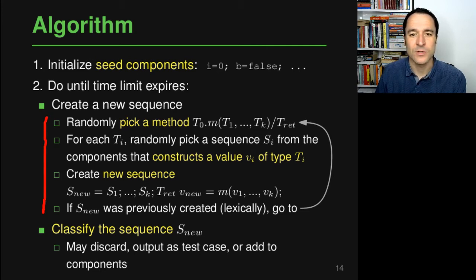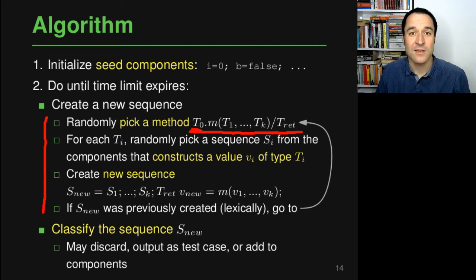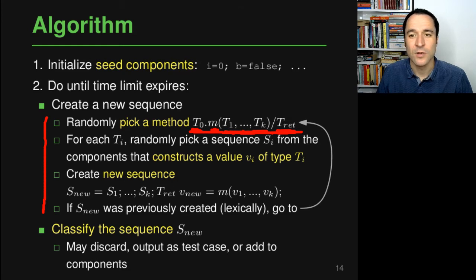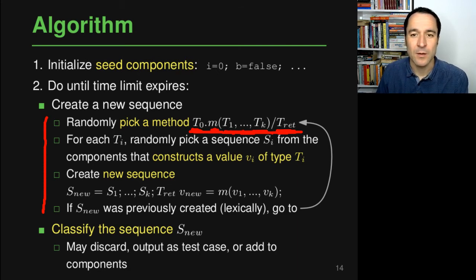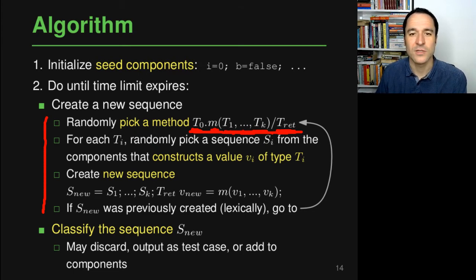Let's go through the first step of creating a new sequence in more detail. The test generator starts by randomly picking a method from the classes under test, represented using a format that says there's a type T0 for the class implementing the method, where we call method M, then types for the arguments expected by this method, and then some type T_ret for the return value. For each of the types—except T_ret—we need a value to actually call this method. If we don't have a value of T0, we cannot call this method, and the same applies to the arguments.